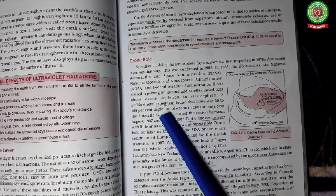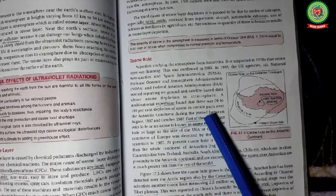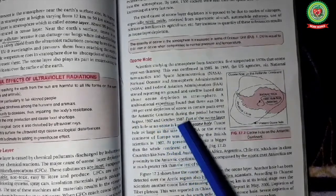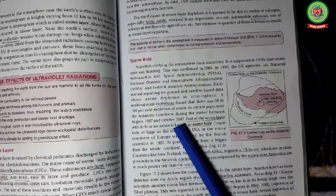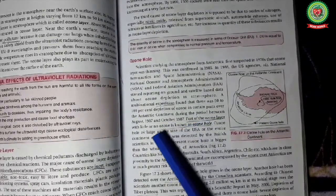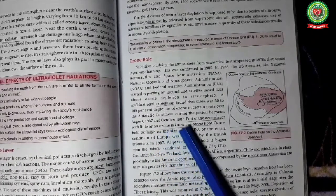A multinational expedition found that there was 50 to 100% depletion of ozone in certain parts over the Antarctic continent during the period of August 1987 to October 1987.